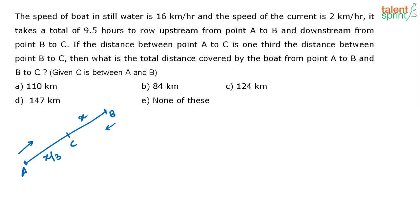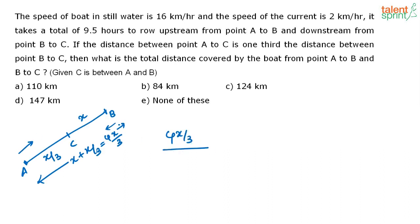The total distance between A and B is X plus X by 3, that is equal to 4X by 3. That is the total distance between A and B. To cover this distance of 4X by 3, the speed upstream is 14 kilometers per hour. So the time taken by the boat to go upstream from A to B is 4X by 3 divided by 14.